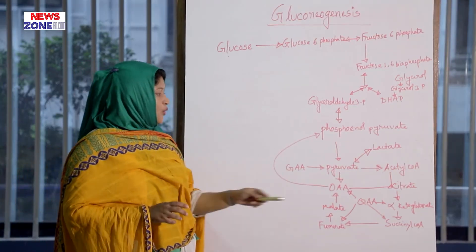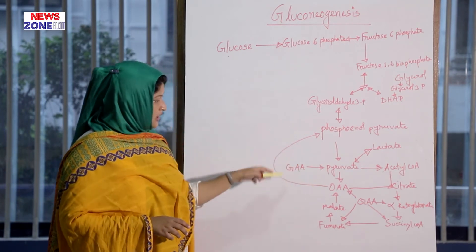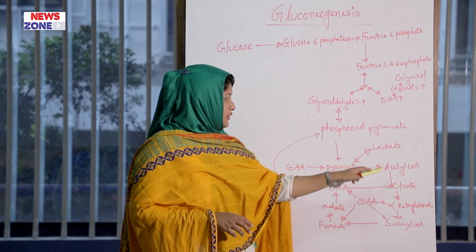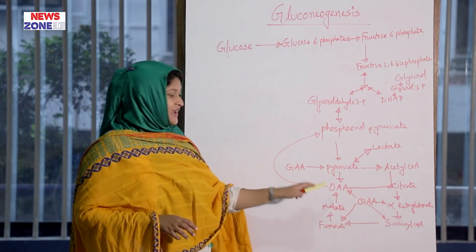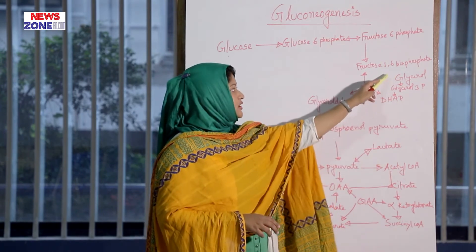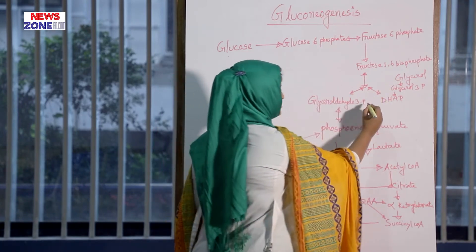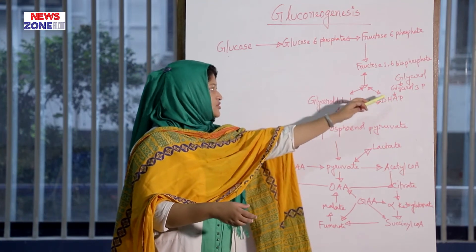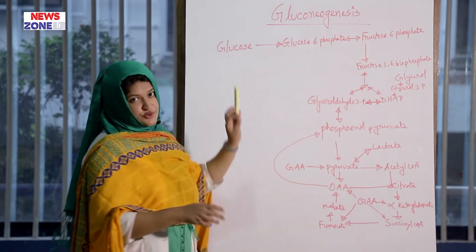Oxaloacetate is the key intermediate for gluconeogenesis because all substrates convert into oxaloacetate, which then produces citrate, alpha-ketoglutarate, succinyl-CoA, fumarate, malate, and back to oxaloacetate via the TCA cycle. The exception is glycerol, which converts into glycerol-3-phosphate and dihydroxyacetone phosphate — these are interconvertible, and from dihydroxyacetone phosphate, fructose-1,6-bisphosphate, fructose-6-phosphate, glucose-6-phosphate, and finally glucose are produced.